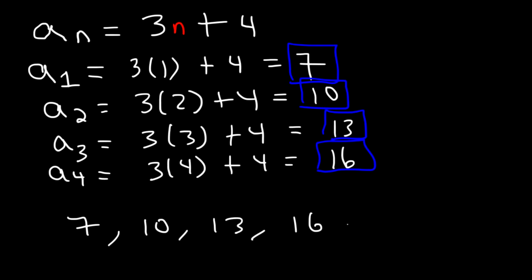Because each number is separated by a common difference, which the common difference is d, d is 3, this is known as an arithmetic sequence. Any time if you can add or subtract by a constant number, it's an arithmetic sequence.